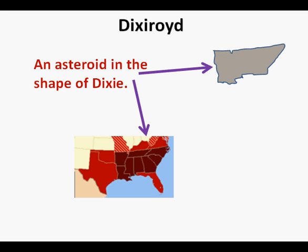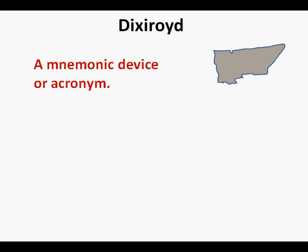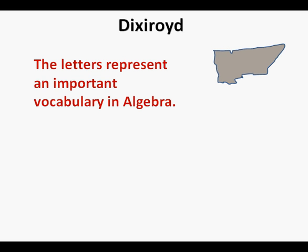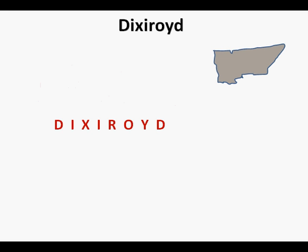But the purpose of its existence is not to contribute to the knowledge base of astronomy, but is a mnemonic device or acronym to help us remember words and meanings of words in algebra. Each letter in Dixieroid stands for a word, and these words, in order, help us to remember key vocabulary that forms a foundation of our understanding in algebra. The first four letters and last four letters represent pairs of words that describe key words in algebra, so let's consider the eight words represented by the letters in Dixieroid.